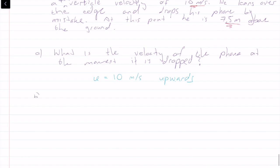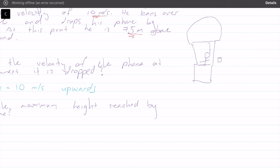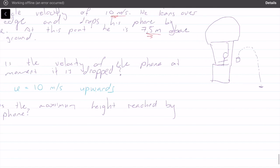Question B: what is the maximum height reached by the phone? Let's draw a quick diagram. We have a hot air balloon, and when James drops his phone it's initially moving upwards. The phone moves upward a bit further after release, then begins to fall until it hits the ground. We want to know the maximum height above the ground.